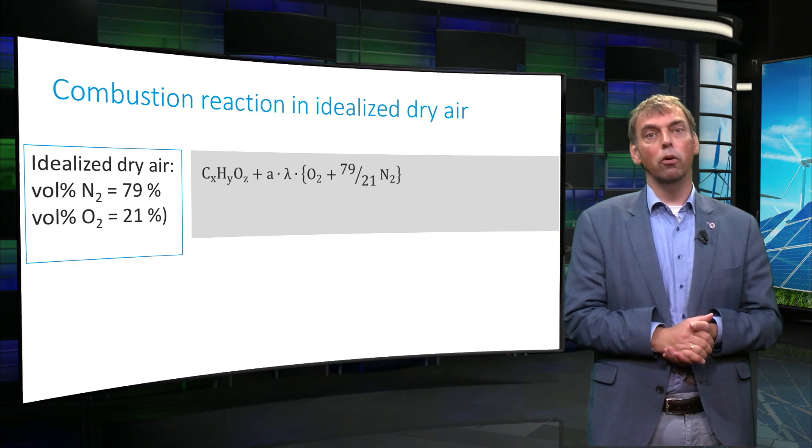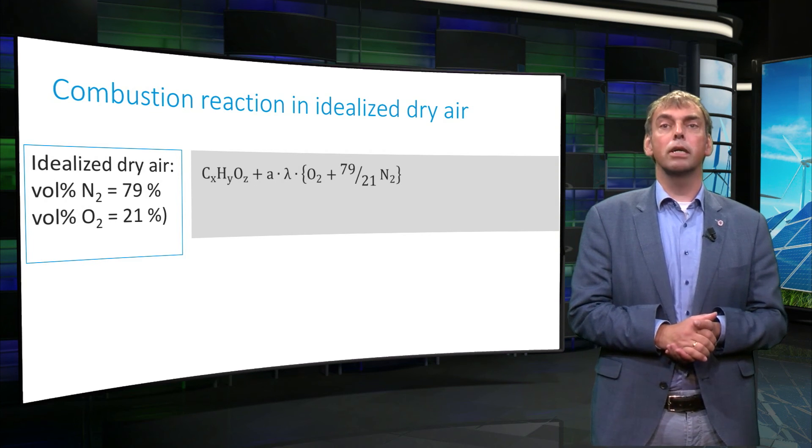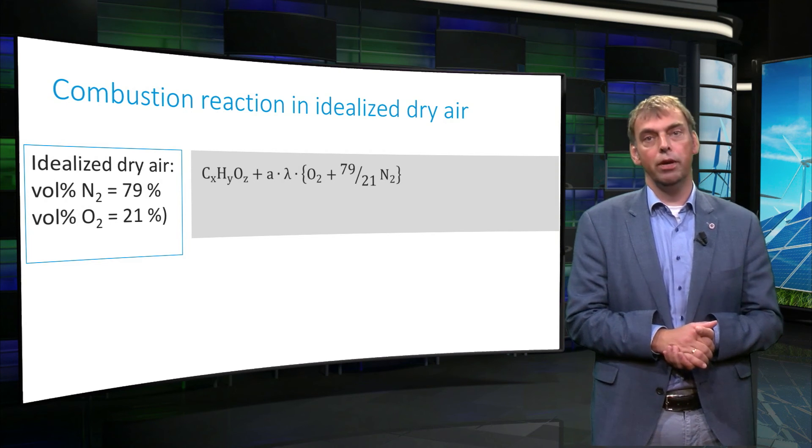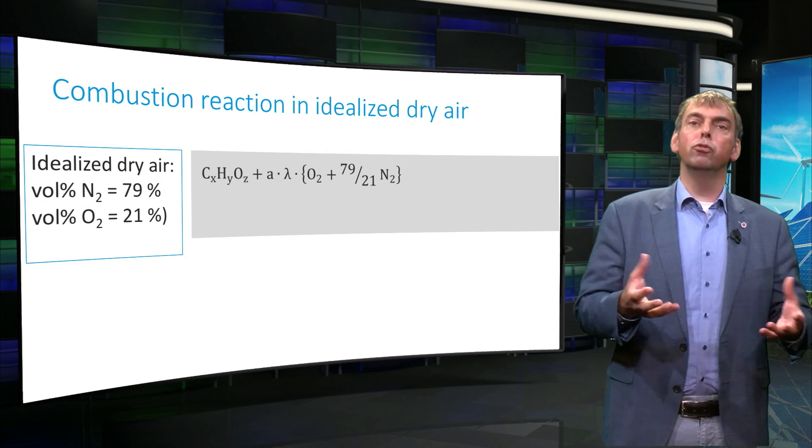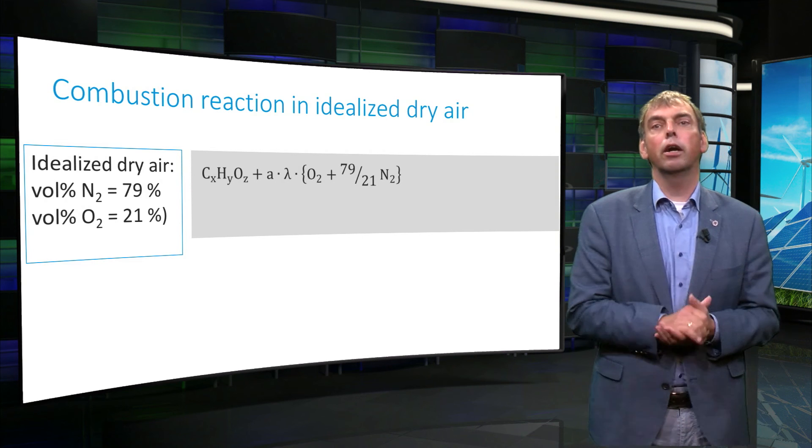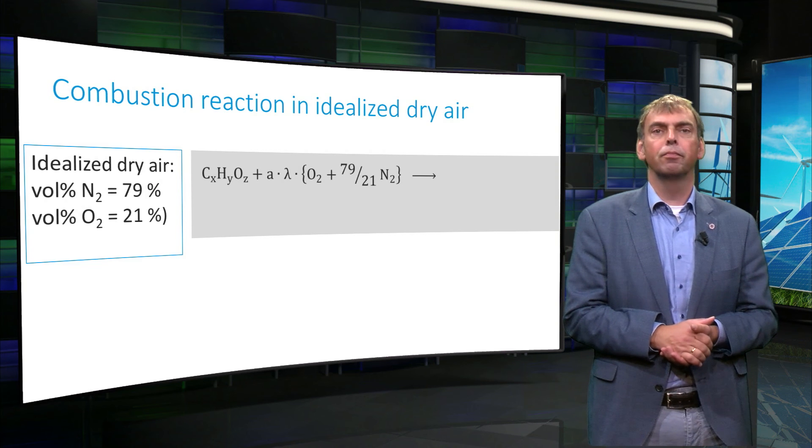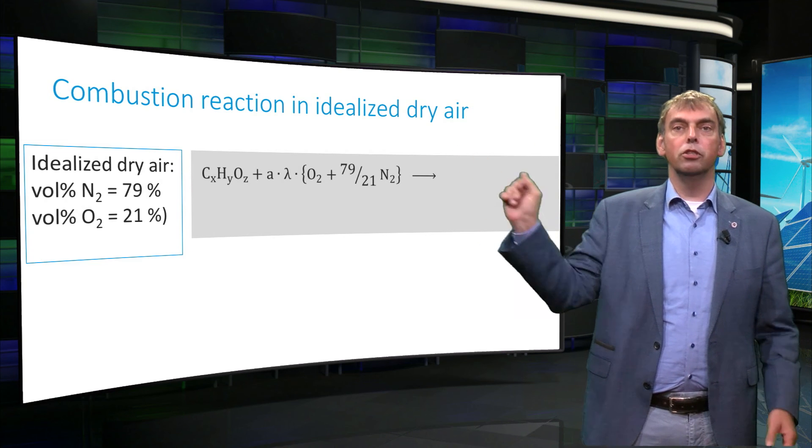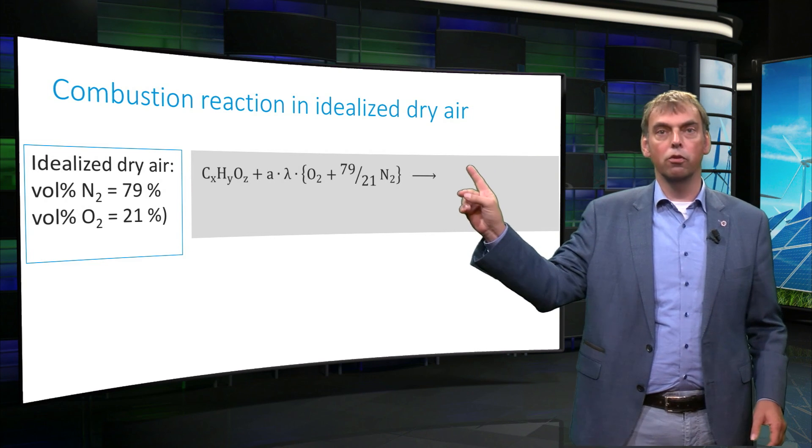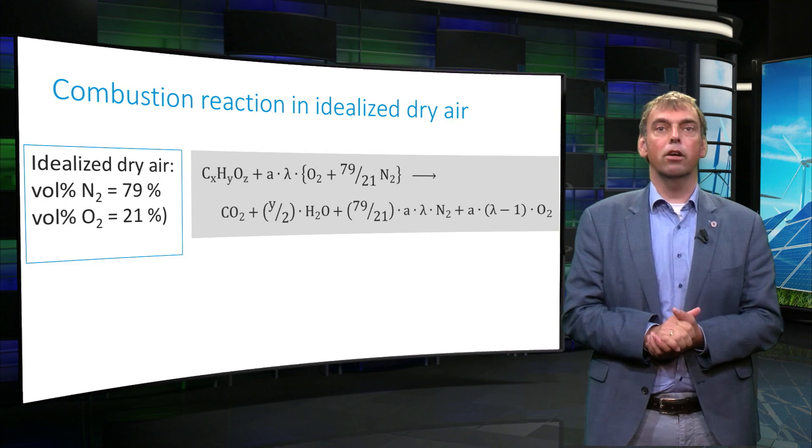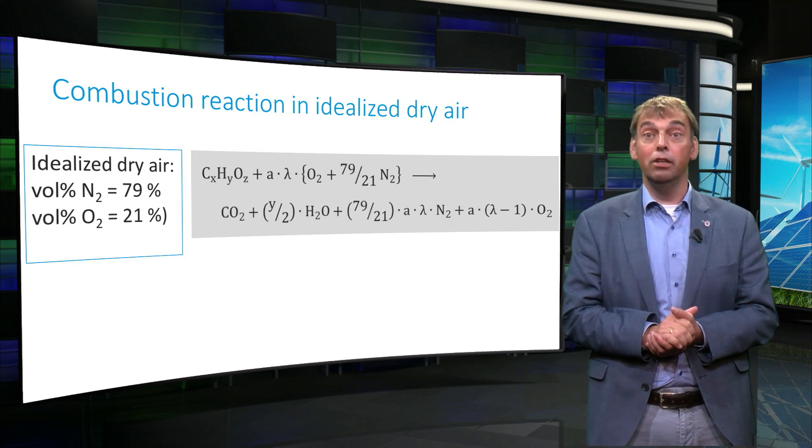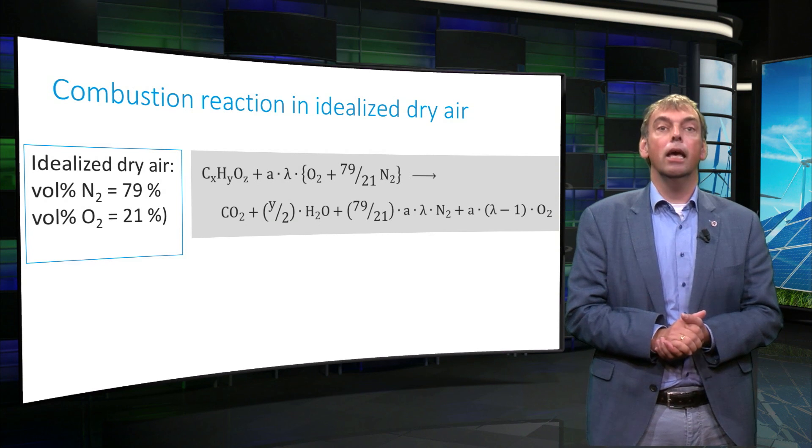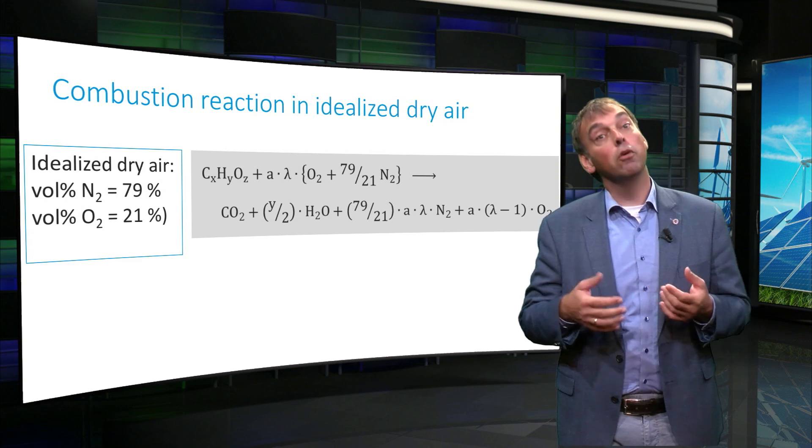1 mole of CxHyOz reacts with A times lambda number of moles of air, which is 1 mole of O2 plus 79 over 21 moles of N2. The reaction products then are x moles of CO2, y over 2 moles of water, plus A times lambda times 79 over 21 moles of nitrogen, and finally A times lambda minus 1 moles of O2.